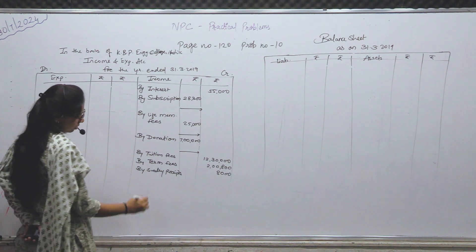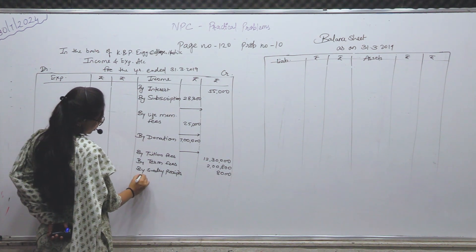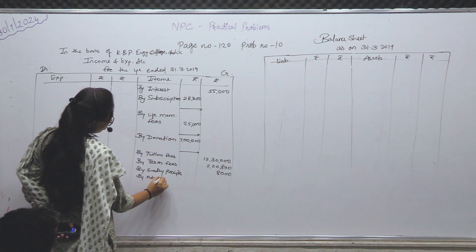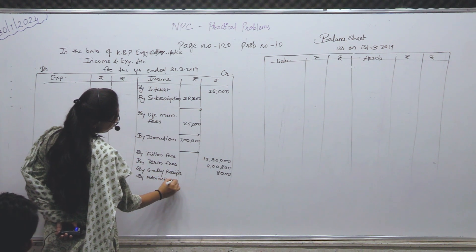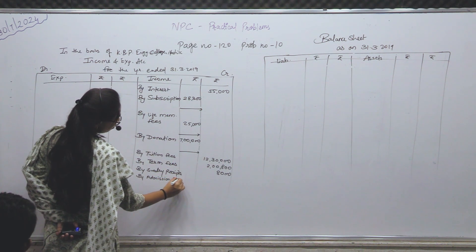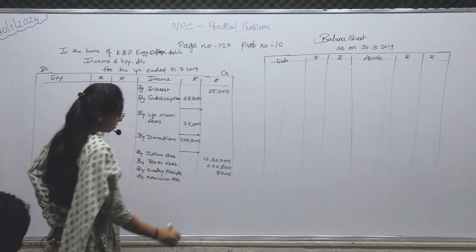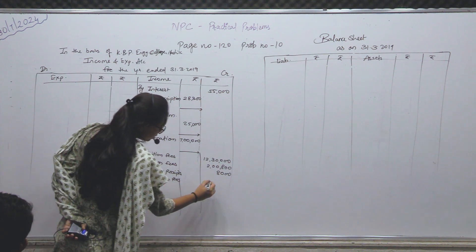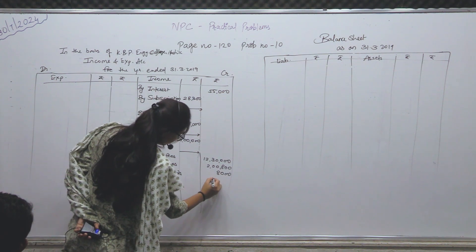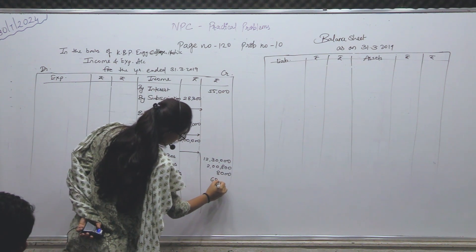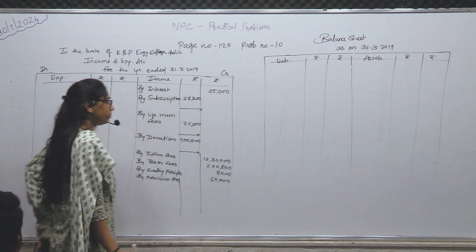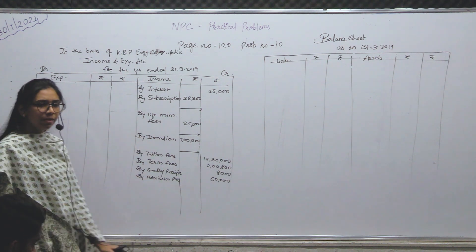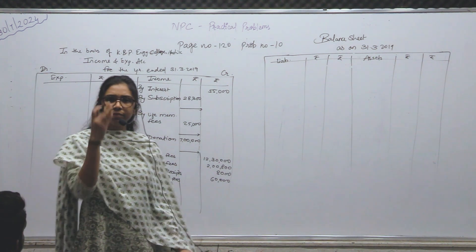Admission fees — adjustment नहीं न। By admission fees — 60,000, 60,000। Done। यह होंगे अपनी receipt side complete।